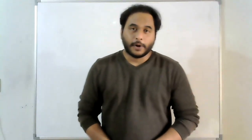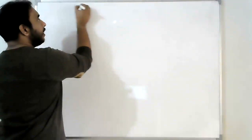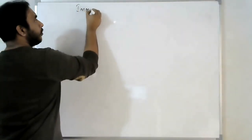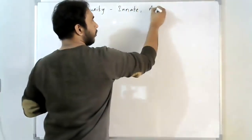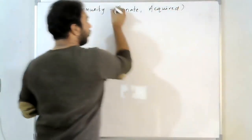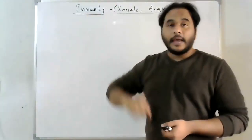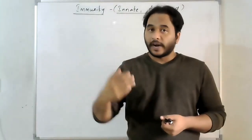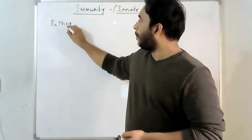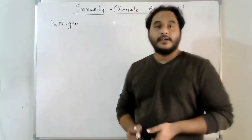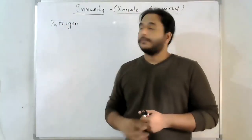Hello, in this video we will talk about innate immunity. It's a type of immunity, so first of all we should know what is meant by immunity. Immunity is the ability of a body to fight against the pathogen, which is nothing but a disease-causing agent. For any infectious agent or pathogen, it's nothing but a disease-causing agent.